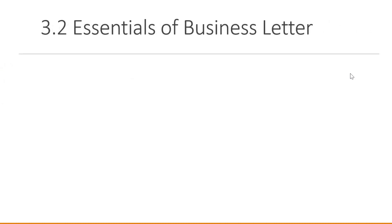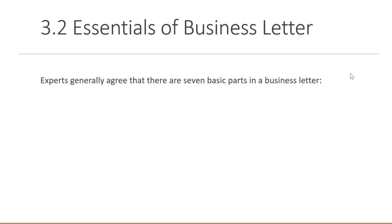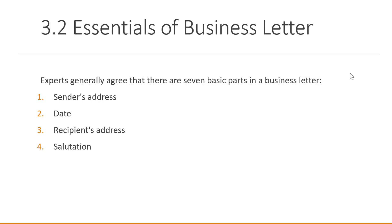When writing a business letter, you also have to understand the essentials. Experts generally agree that there are seven basic parts in a business letter. Number one: sender's address. Number two: date. Number three: recipient's address. You also have to use the right salutation, and the reason for writing the letter has to be in the main body. Then closing or signature, and finally any attachments or enclosures.